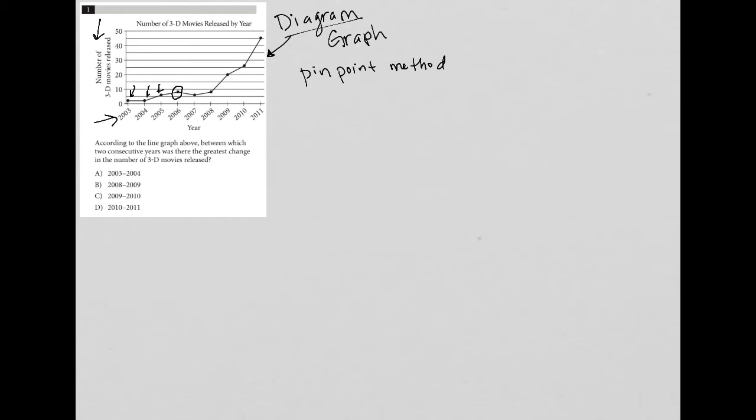Now, the question says: according to the line graph above, between which two consecutive years was there the greatest change in the number of 3D movies released? That means I need to look at the answer choices themselves and test each one.